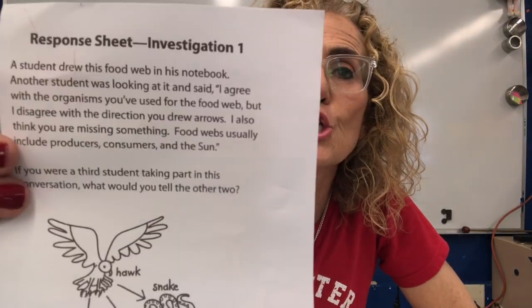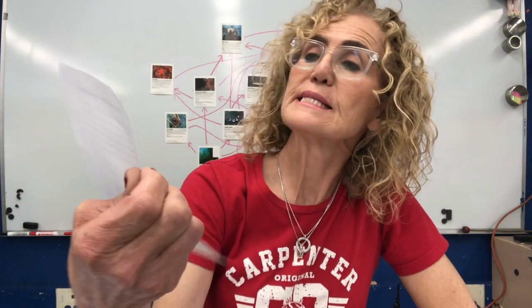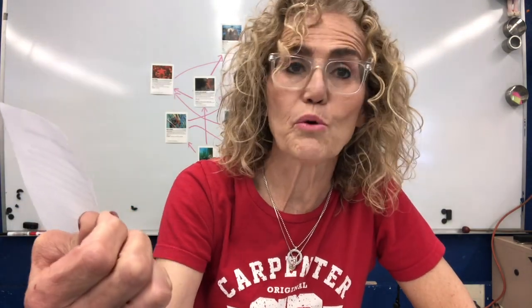To wrap up, I'd like us to look at this page — it's response sheet investigation number one. It says a student drew this food web in his notebook. Another student was looking at it and said, 'I agree with the organisms you've used in your food web, but I disagree with the direction you drew the arrows. I also think you are missing something. Food webs usually include producers, consumers, and the sun.' If you were a third student taking part in this conversation, what would you tell the other two? Let's take a look at this picture.